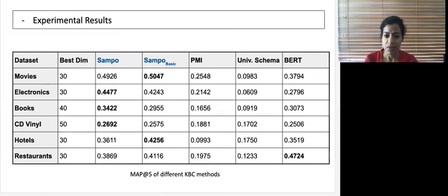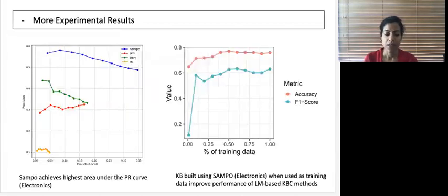We use mean average precision of the top five implications as a metric and we found that SAMPO consistently outperformed the baselines on five domains except for restaurants. SAMPO also achieved highest area under the precision recall curve on all domains except for restaurants, and we found that our KB can indeed be used as training data for supervised language model based methods.